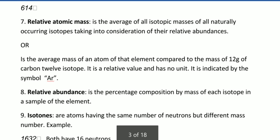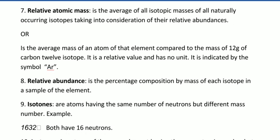Relative atomic mass is the average of all isotopic masses of all naturally occurring isotopes, taking into consideration their relative abundances. I hope most of you, if not all, are remembering your form two chemistry - how we calculate the atomic mass. But what else? We shall calculate them later in this topic of general chemistry. Another definition: the average mass of an atom of that element compared to 12 grams of carbon-12 isotope. It is a relative value and has no unit. It is indicated by Ar.